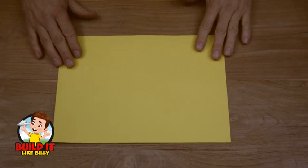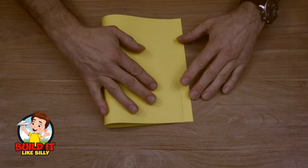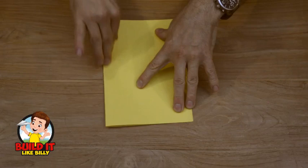Right, to get started on our water strider, or our pond skater, we're going to use a thin piece of card. We first fold the card in half, like so.